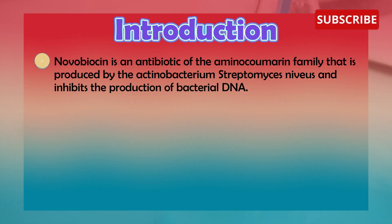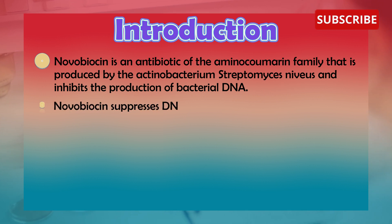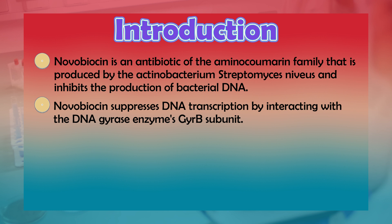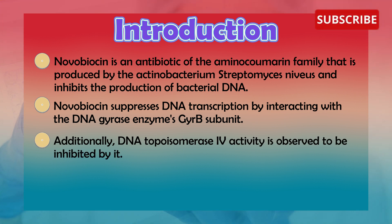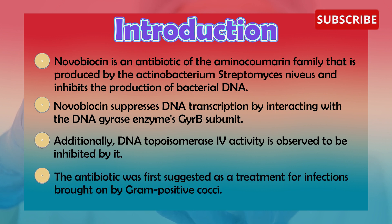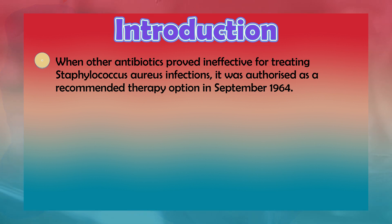Novobiocin is an antibiotic of an aminocoumarin family that is produced by the actinobacterium Streptomyces niveus and inhibits reproduction of bacterial DNA. Novobiocin suppresses DNA transcription by interacting with the DNA gyrase enzyme's gyrase B subunit. Additionally, DNA topoisomerase IV activity is observed to be inhibited by it. The antibiotic was first suggested as a treatment for infections brought on by gram-positive cocci. When other antibiotics proved ineffective for treating Staphylococcus aureus infections, it was authorized as a recommended therapy option in September 1964.